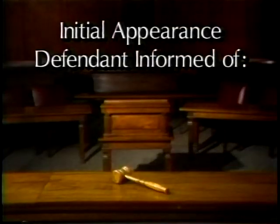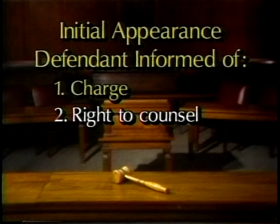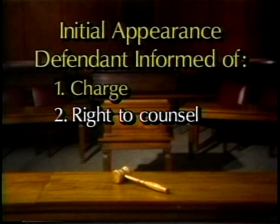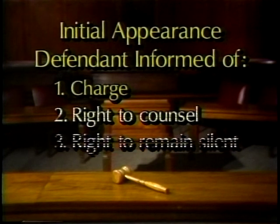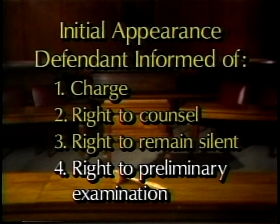Let's review what happened to Smith at her initial appearance. First, the magistrate informed Smith of the charge against her and of her right to the assistance of counsel. Since Smith is an indigent defendant, arrangements were made to have a federal public defender represent her under the Criminal Justice Act. Smith was also told that she has a right to remain silent — she is not required to make any statement, and any statement she does make can be used against her. Smith was informed of her right to a preliminary examination. Finally, Angela Smith was incarcerated pending her detention hearing under the provisions of the Bail Reform Act.